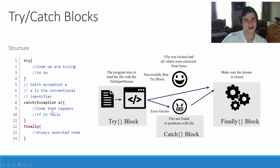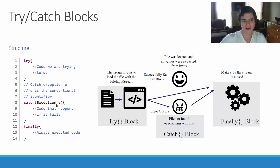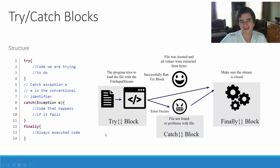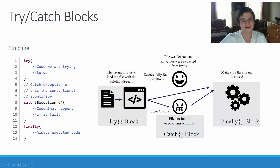We catch the exception in the catch block. Using a generic Exception — catching Exception e — will catch any exception that could possibly go wrong, and we can handle it within the catch block. The finally block is code that always gets executed. In our example, we try to open a file in the try block, catch what goes wrong in the catch block, and then in the finally block we make sure that the file input stream gets closed.